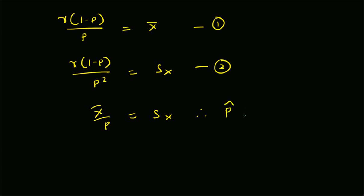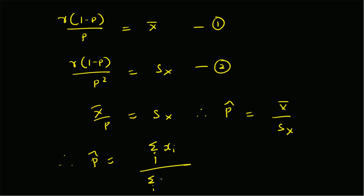Therefore, the parameter p can be estimated as p-hat equal to the sample mean divided by sample variance. In other words, p-hat equals the summation over i of x_i divided by the summation over i of (x_i minus x-bar) squared. That is the estimate of the parameter p.